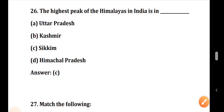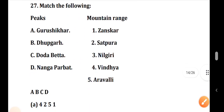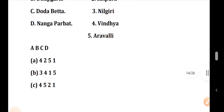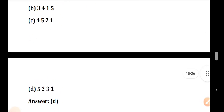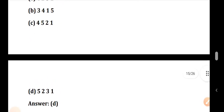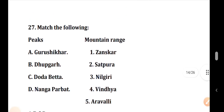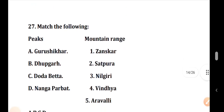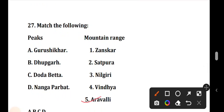Question number 27: The highest peak of the mountain range in India. The answer is Option D, 5-2-3-1. This means Guru Shikhar is used in the mountain ascending.